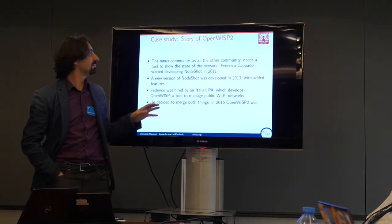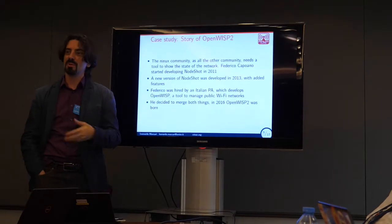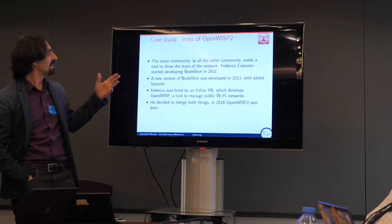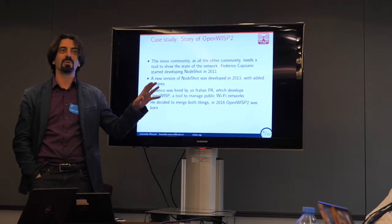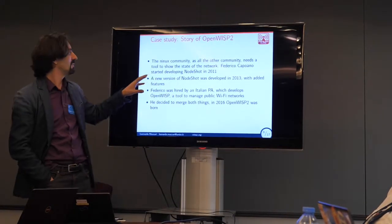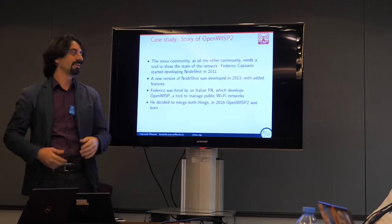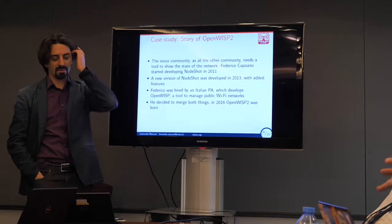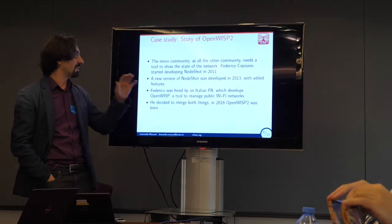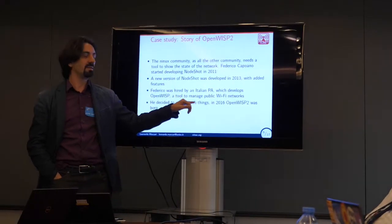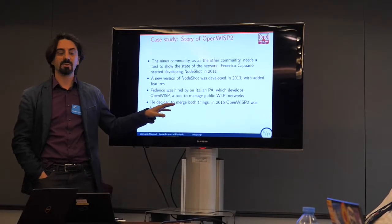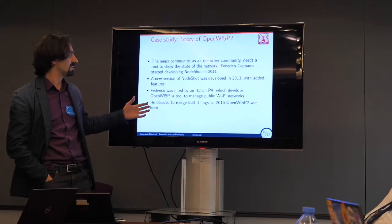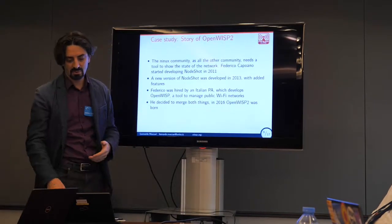There is a story from the Ninux community. If you tell a story with a person's face and name, it's much better than numbers. There is this person called Federico. Mesh network communities like to have maps because we like to see the network. He started to develop the front-end for our map in 2011, then again in 2013 he started over. Then he was hired by an Italian public administration which develops a tool they use to manage public Wi-Fi — tens of networks use this open source project to manage the network.